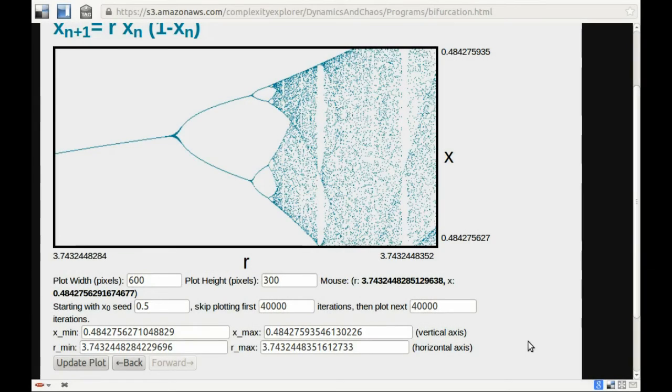So here's the bifurcation diagram again. And if this bifurcation diagram is about 10 centimeters on your screen, this small, tiny, tiny little portion of the full bifurcation diagram looks to be about 10 centimeters, then at this magnification, the full bifurcation diagram from R equals 0 to R equals 4 would stretch around the circumference of the Earth.